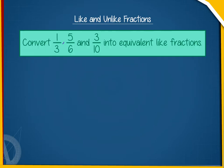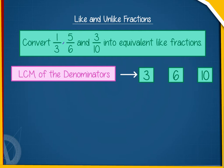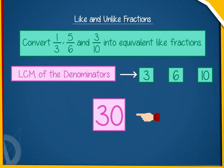Let us convert 1 by 3, 5 by 6, and 3 by 10 into equivalent like fractions. First, we will find the LCM of the denominators 3, 6, and 10. We find that the LCM of 3, 6, and 10 is 30.